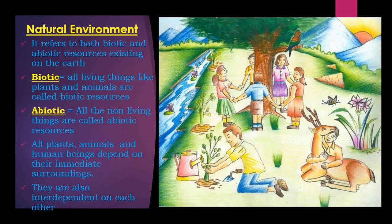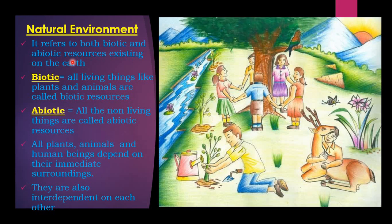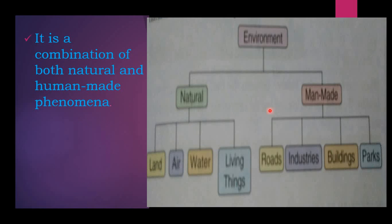Okay children, so far we dealt with the first paragraph: what is environment? And secondly, the environment divided into two — one is natural, one is man-made. Already I explained to you what is natural and what is man-made things.